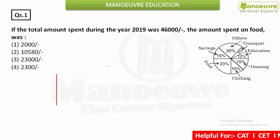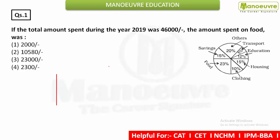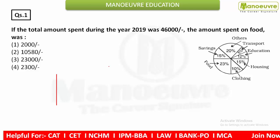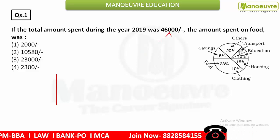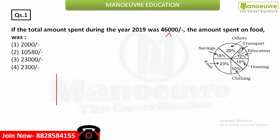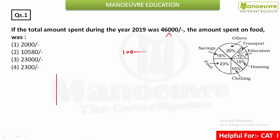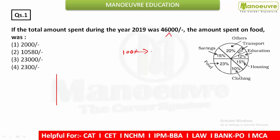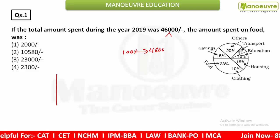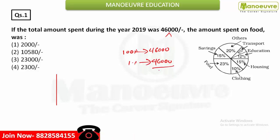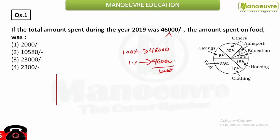The first question: if the total amount spent during the year 2019 is 46,000, find the amount spent on food. The total amount is 46,000, which represents 100%. So 1% equals 46,000 divided by 100, which gives us 460.